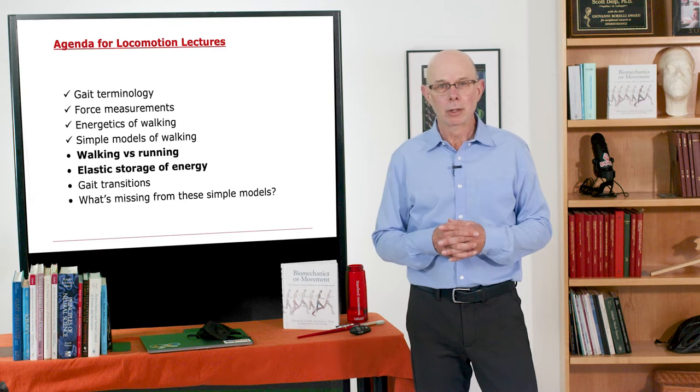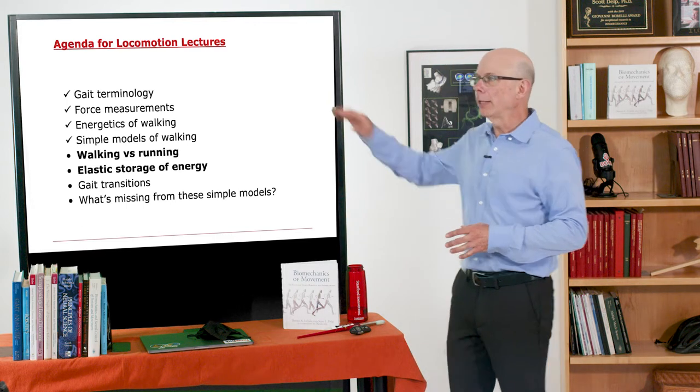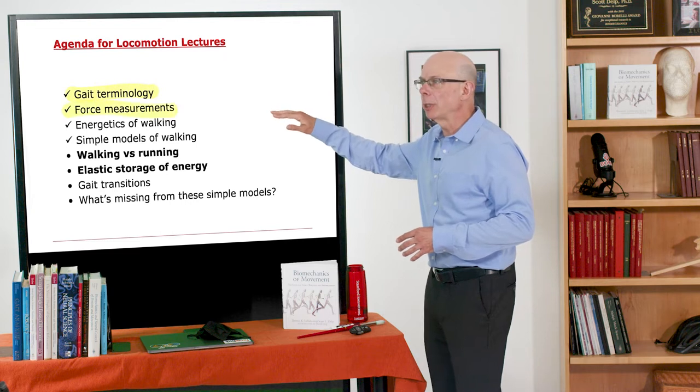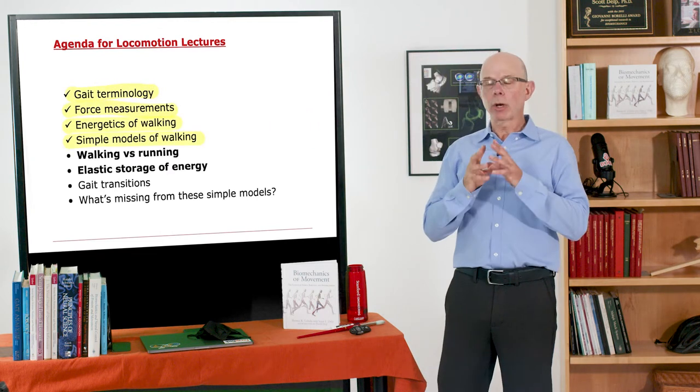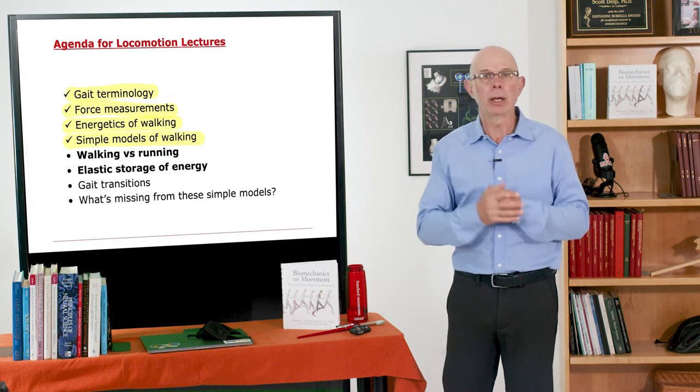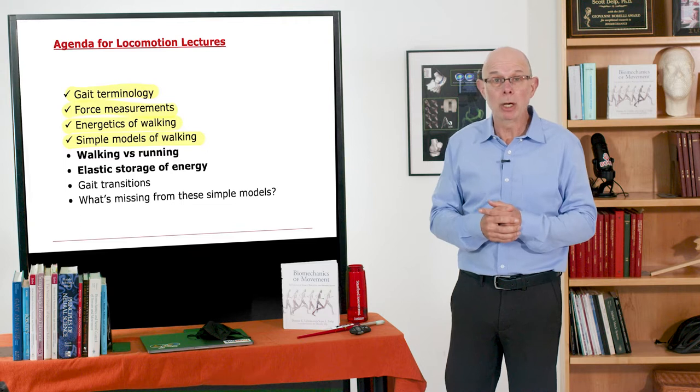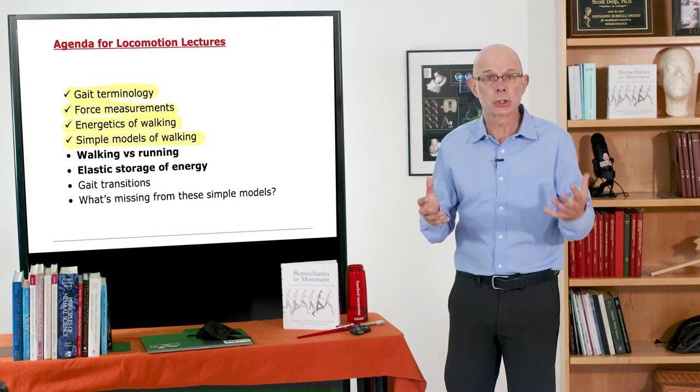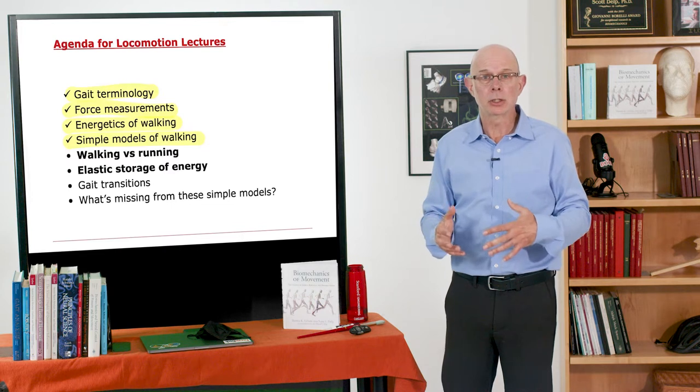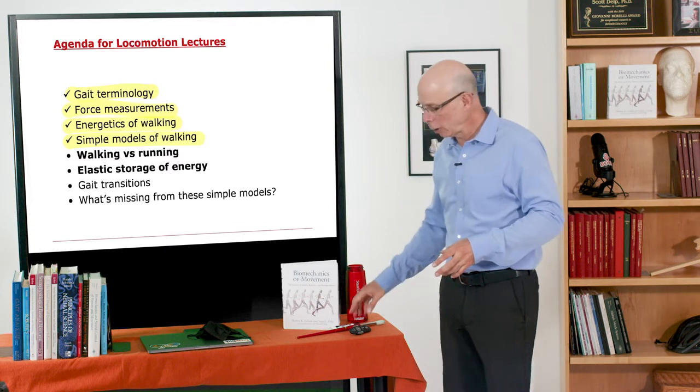Here's where we are in our locomotion journey. We've talked about basic gait terminology, force measurements, energetics of walking, and simple models of walking. And now we're going to talk about how walking and running differ. The key difference is we get much more elastic storage of energy in running. The forces are higher, so using this spring mass model for running is key. So that's where we're headed next.